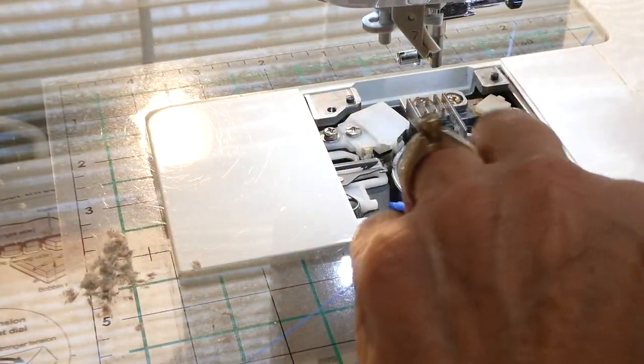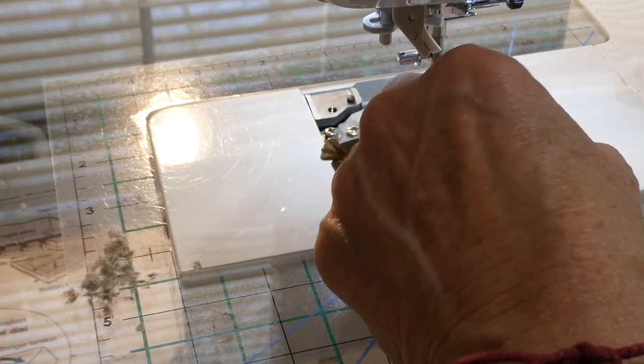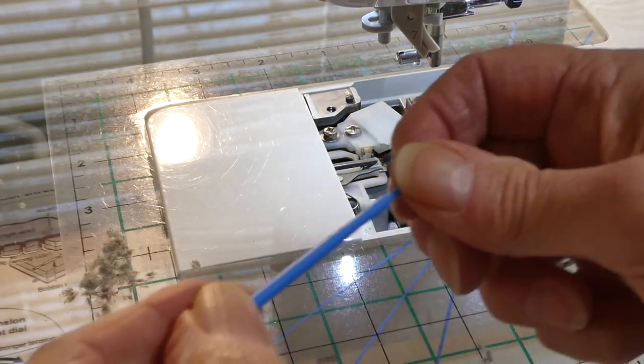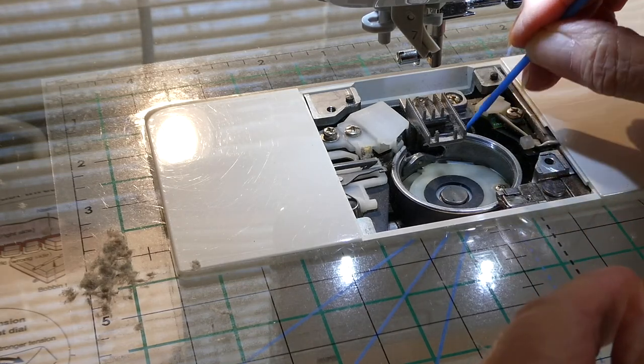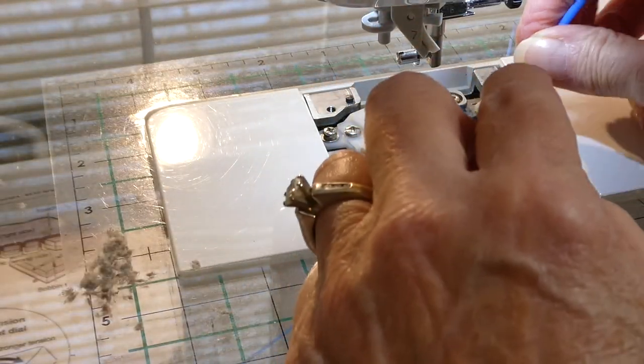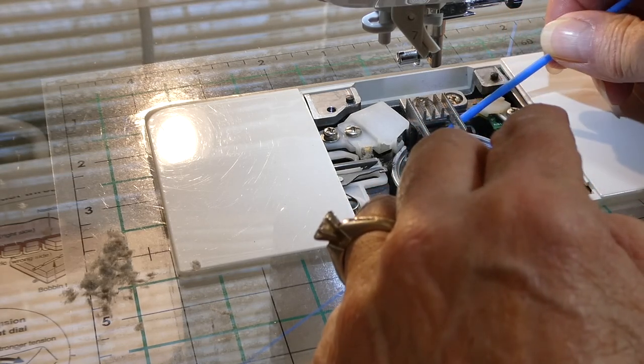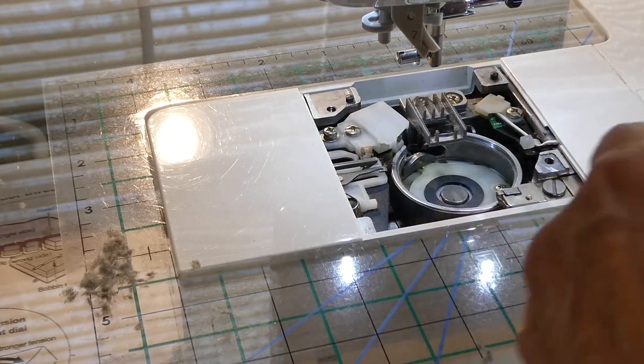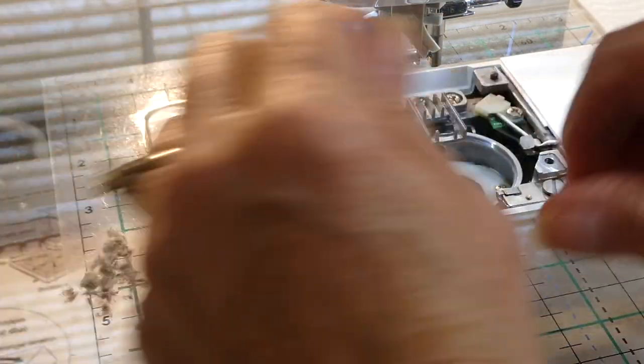If you've ever thought about using compressed air to clean your machine with, don't do it. Because all it does is drive all the lint and everything that you're watching me pull out down inside. Very little of it actually would get blown out. It would just go down inside your machine and back into the back, and prevent the internal mechanisms from working like they're supposed to. And that is a definite we don't want.